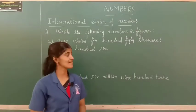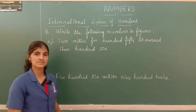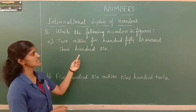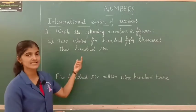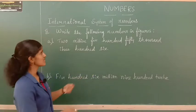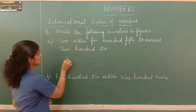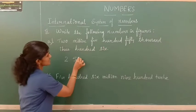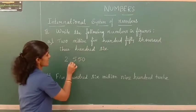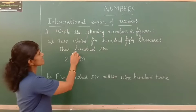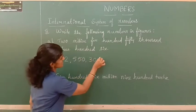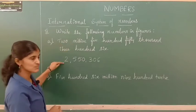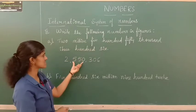Now let us write the following numbers in figures. The first question: two million, five hundred fifty thousand, three hundred six. So two million goes in the millions place, five hundred fifty thousand goes in the thousands period.